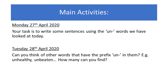Your main activity for Monday the 27th of April is to write some sentences using the un words that we have looked at today. You can write as many sentences as you'd like, but please write at least three. Then on Tuesday the 28th of April, I would like you to think of other words that have the prefix un in them and write those down. For example, unhealthy is a new un word. Unbeaten is another. Make that list as long as you can.